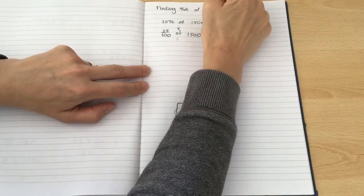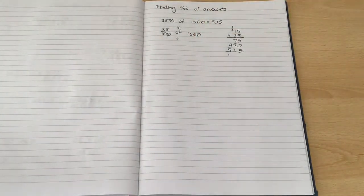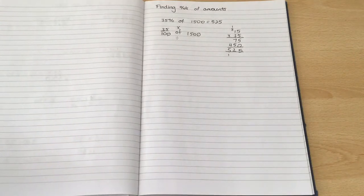Now because I've done it that way, I've cancelled down, that is actually the only calculation that I need to do.